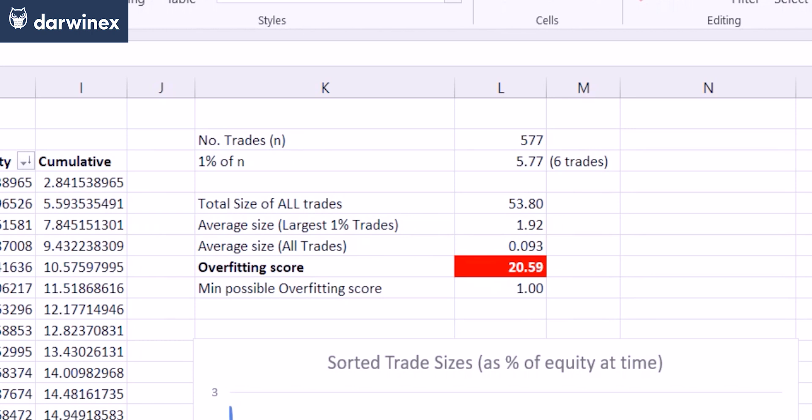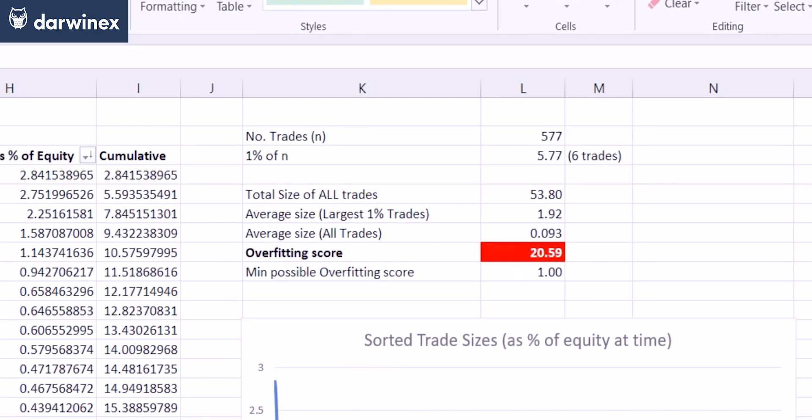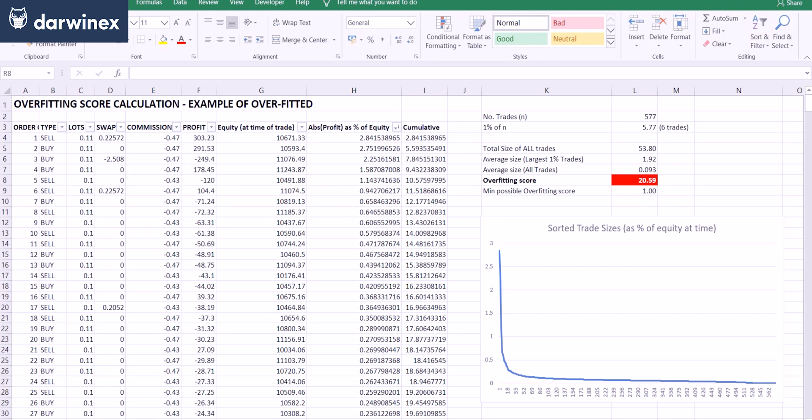The calculation of the events overfitting score is done above the chart and it's highlighted in red. It comes in at just a little over 20, which classifies it as overfitted. This effectively means that the one percent of trades are 20 times bigger on average than the overall average size of the trade in the optimization.